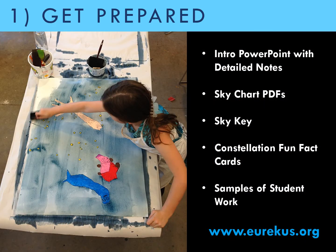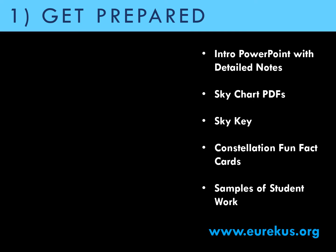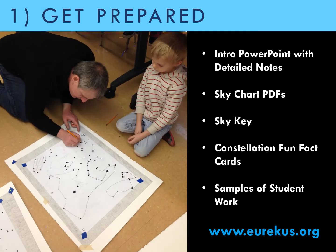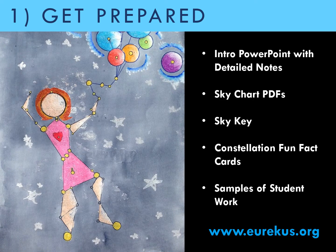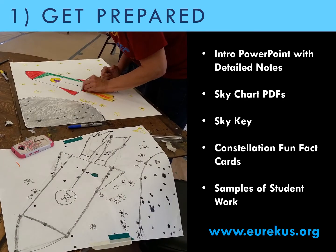To get prepared, head to our website where you can download all the free resources. Access the PowerPoint with detailed notes. You'll also need to print the PDF sky charts — there are two versions, one with lines and one without. These will be used to inspire learners' constellation stories and artwork. There's also a PDF sky key, which shows how you can reassemble the northern night sky and read what the sky chart symbols mean. You'll also find our constellation fun fact cards and many examples of student work to inspire you.